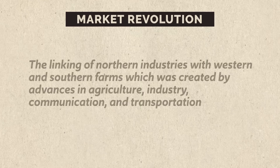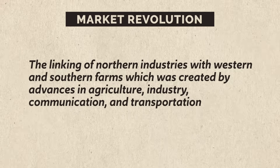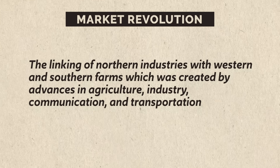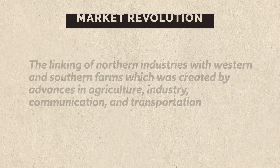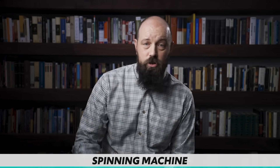Now let's turn to what's going on at home — specifically society and economy — all of which can be summed up with the Market Revolution. By definition, the Market Revolution was the linking of Northern industries with Western and Southern farms, created by advances in agriculture, industry, communication, and transportation. New technology gave this revolution its big push forward. The cotton gin and the spinning machine revolutionized Southern agriculture and Northern industry — the cotton gin significantly sped up separating seeds from cotton fibers, and the spinning machine sped up spinning cotton into yarn. Another breakthrough was the advent of interchangeable parts.